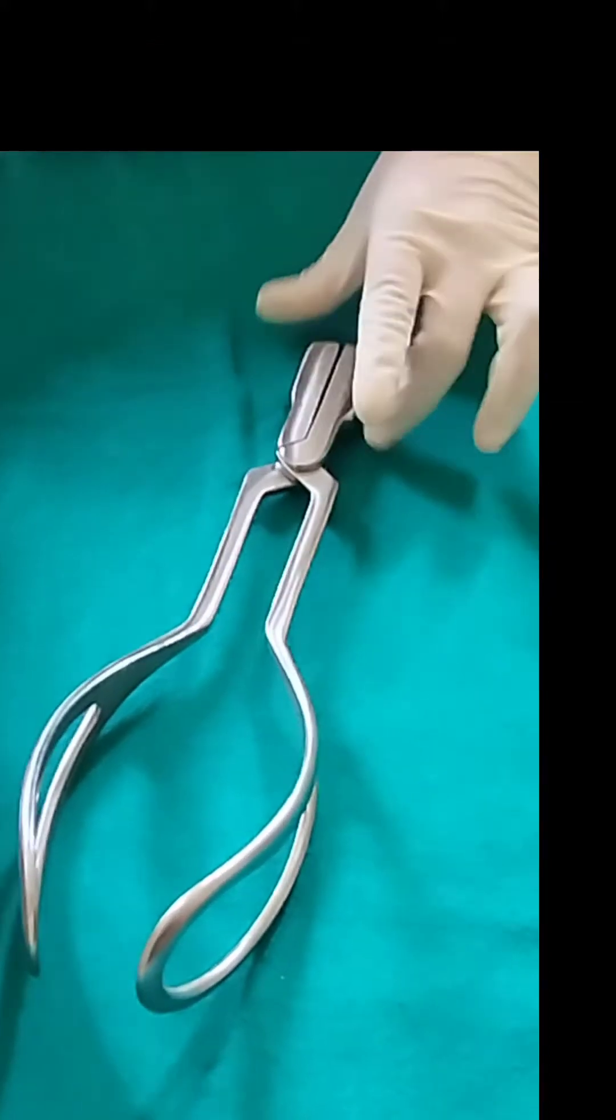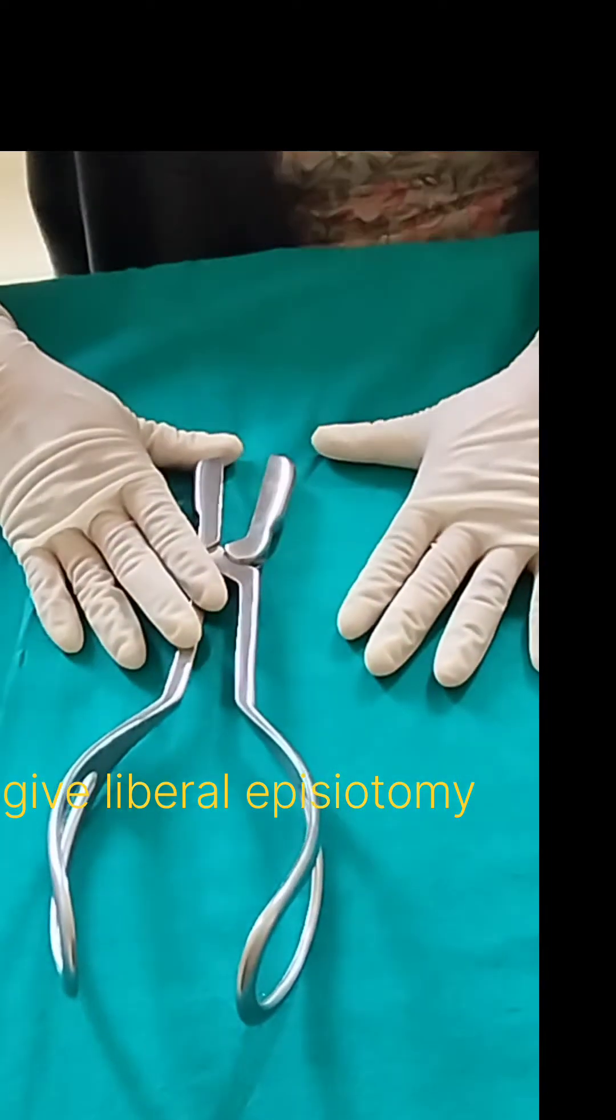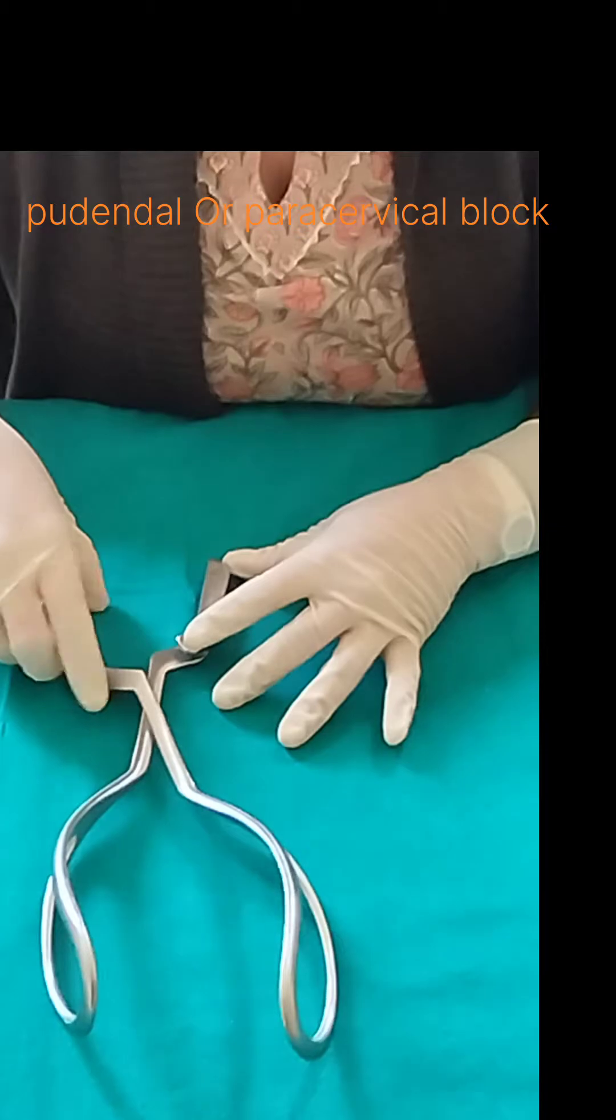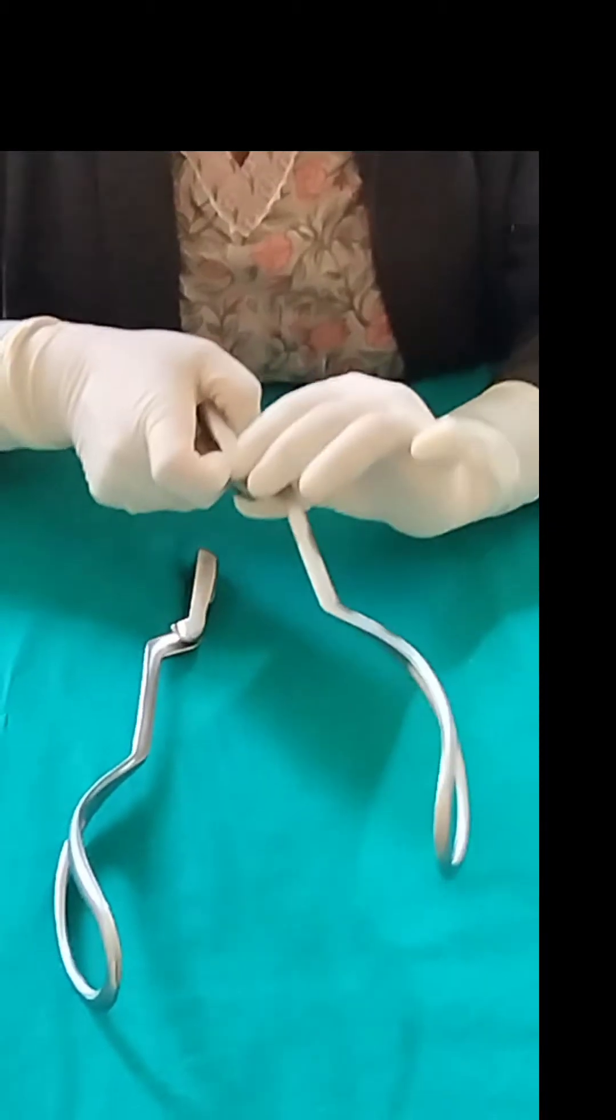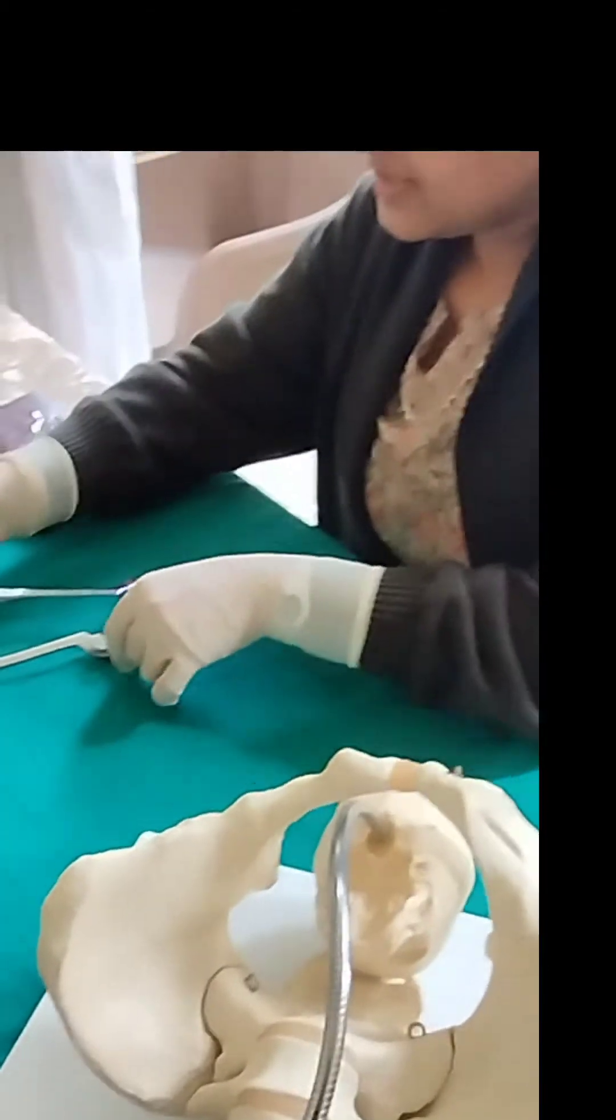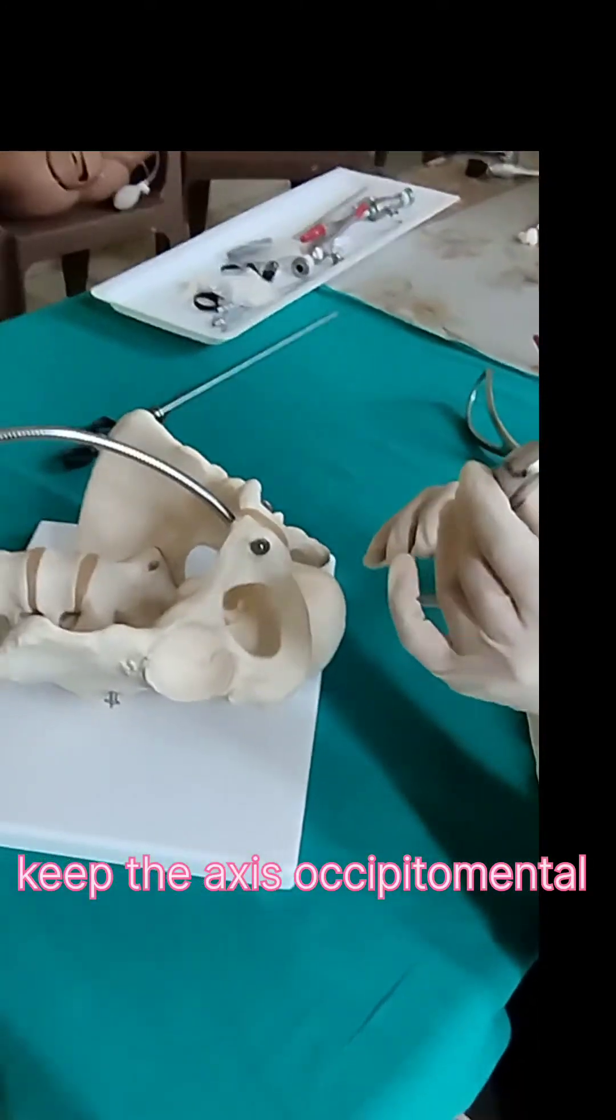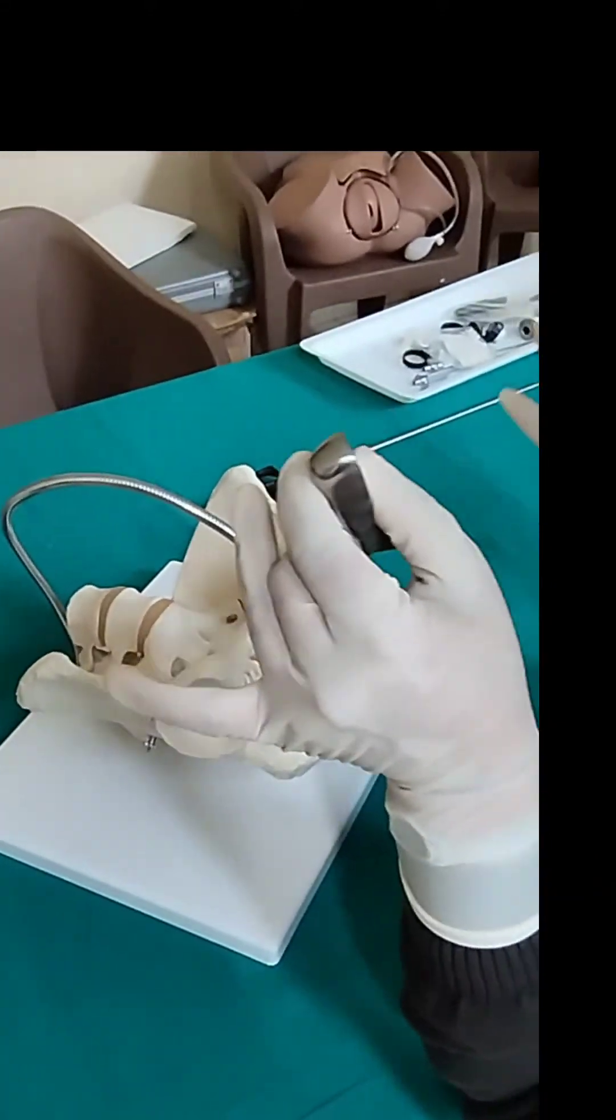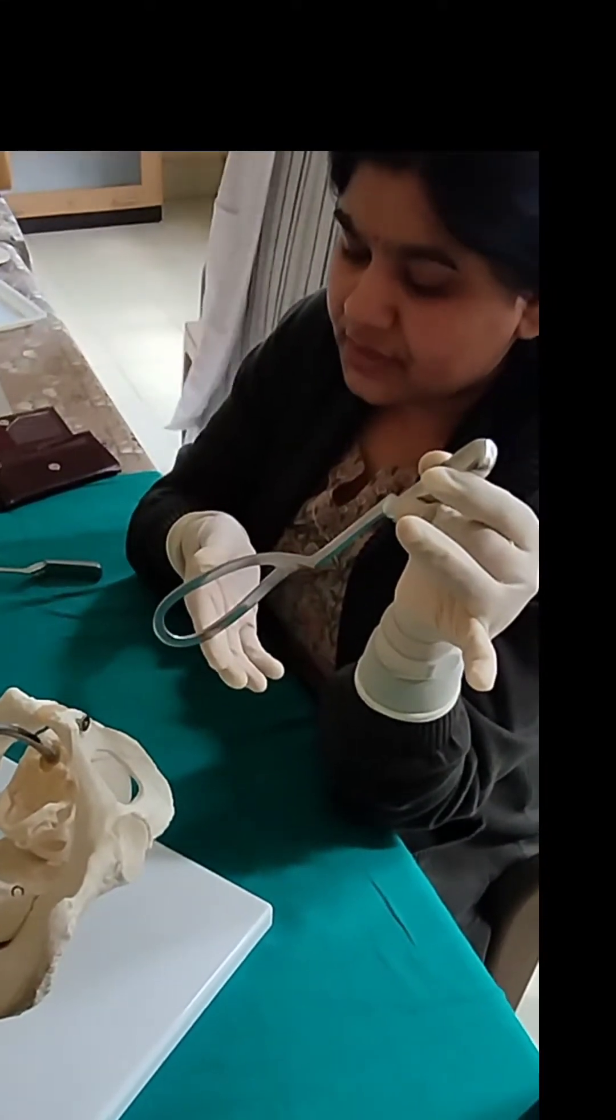Now how do we hold the forceps? Holding the forceps and application of the forceps. After prior catheterization of the patient, prior anesthesia, and after ensuring all the prerequisites, we will hold the left sided forceps in our left hand, making an angle of 45 degrees with the horizontal. This is the way we are holding. We will lubricate the tip of the forceps with some xylocaine jelly.